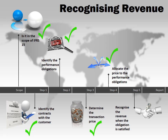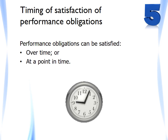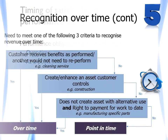Step 5 of the model deals with the actual timing of revenue recognition. IFRS 15 requires revenue to be recognised as or when a performance obligation is satisfied, based on when control of the good or service is transferred to the customer. It is necessary to first determine whether or not the overtime revenue recognition criteria have been met — if not, that is an indicator that revenue is going to be recognised at a point in time.